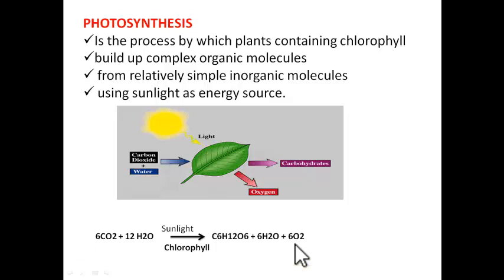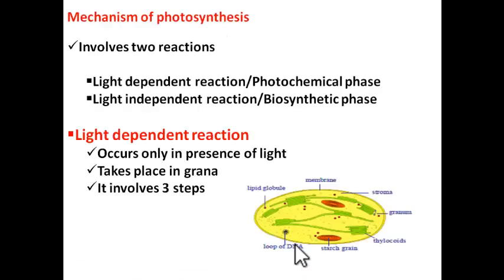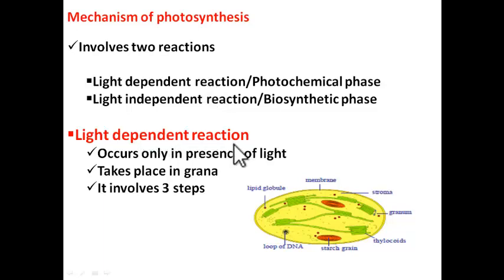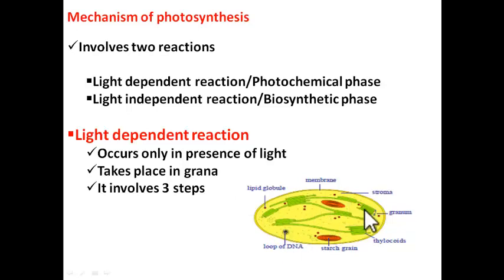Now, how exactly does photosynthesis take place? That is the mechanism of photosynthesis. In the mechanism there are two reactions: light dependent reaction and light independent reaction. The light dependent reaction is also called the photochemical phase, and the light independent reaction is called the biosynthetic phase. Light dependent reaction occurs only in the presence of light — during daytime. It takes place in the grana, which are present inside the chloroplast. This reaction has three steps.